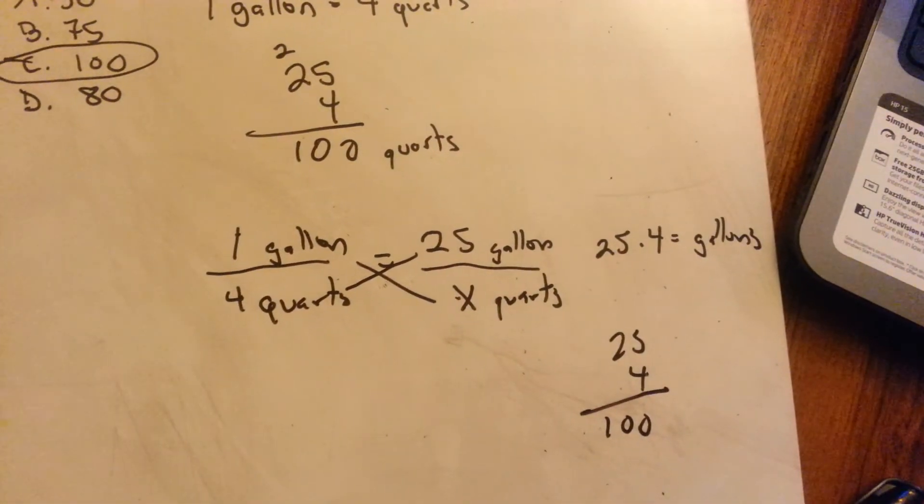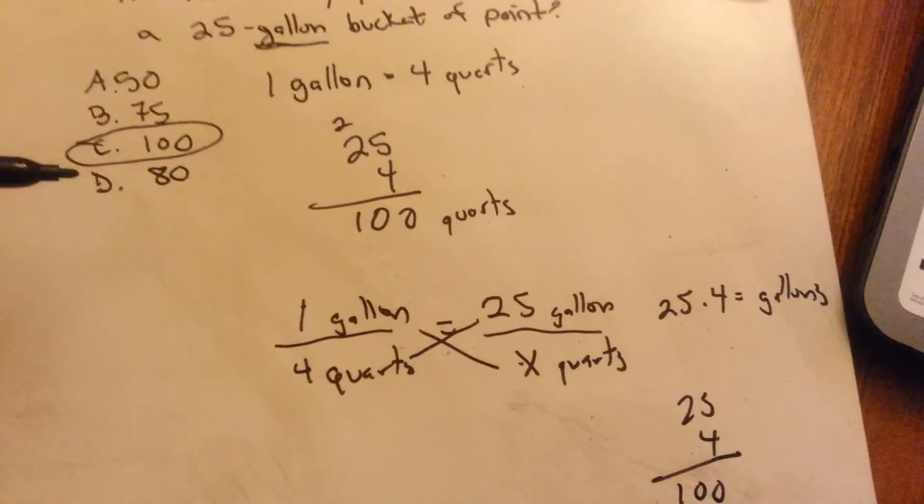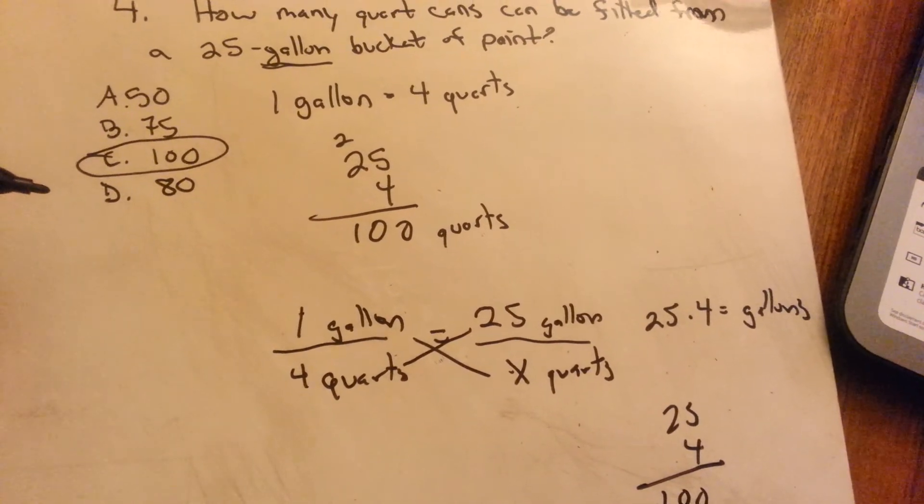So just another setup for how you could find the right answer. So there you go. Answer C, 100 quarts in 25 gallons.